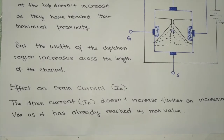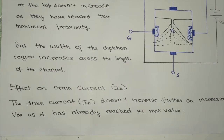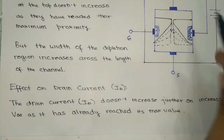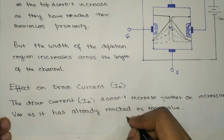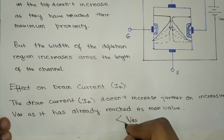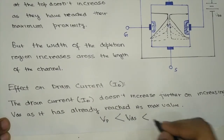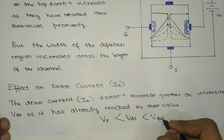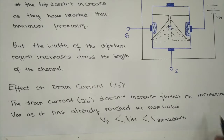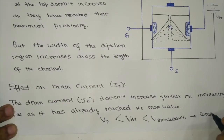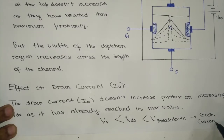Thus, JFET can act as a constant current source when the voltage between the drain and source terminal is between the pinch-off voltage and the breakdown voltage — that is, VDS must be greater than the pinch-off voltage and less than the breakdown voltage. In this range, JFET acts as a constant current source.